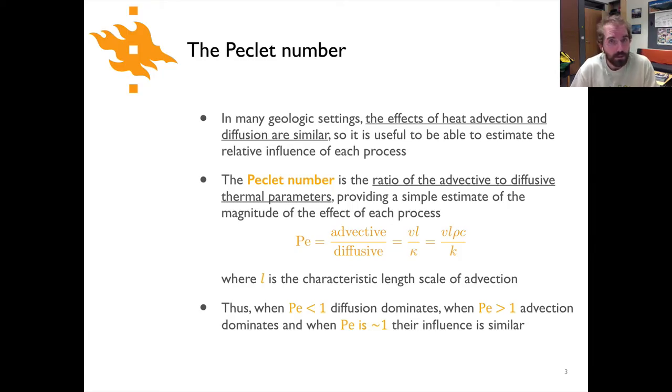The reason in part that the Peclet number is useful is that in many geological settings the influence of heat transfer by advection and heat transfer by diffusion are similar. So it's nice to be able to have some way of estimating which one of those two heat transfer processes might be more or less important in a given setting.